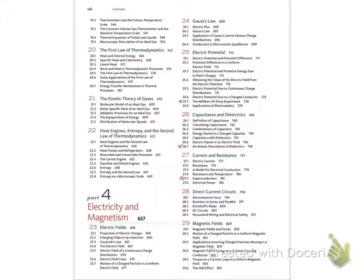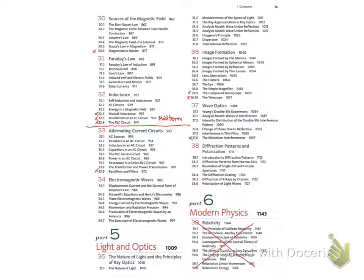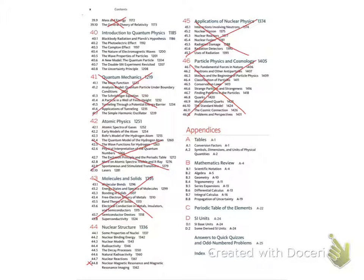In this slide, topics marked with a clause like this will be omitted. We will omit the whole chapter on relativity, the whole chapter on quantum mechanics, molecules and solids, and the last two chapters on applications of nuclear physics and particle physics and cosmology. That is all that we will study in this course.